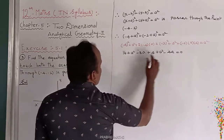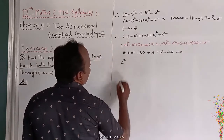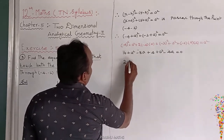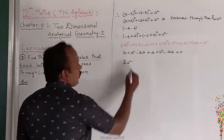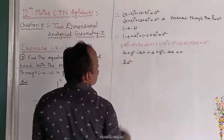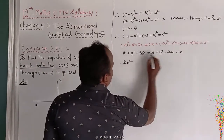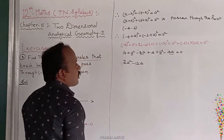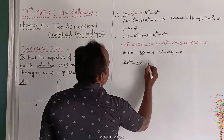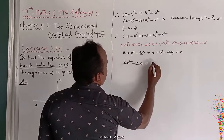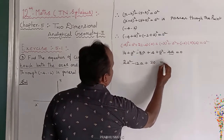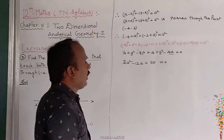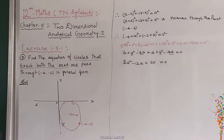The a squared terms simplify: two a squared minus a squared gives a squared. Combining constants and a terms: a squared minus 12a plus 20 equals 0. This is the quadratic equation to solve.